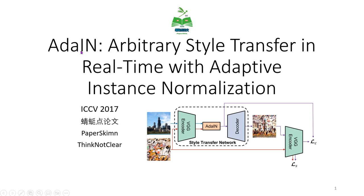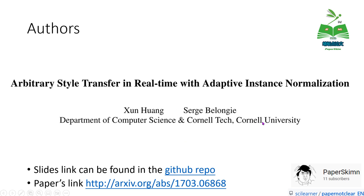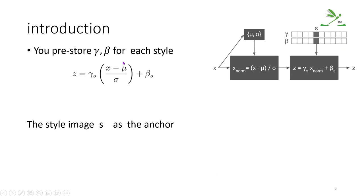This paper, 'Arbitrary Style Transfer in Real Time with Adaptive Instance Normalization,' is published at a conference and authored by researchers from Cornell University. The paper focuses on instance normalization and conditional instance normalization for style transfer. For normalization layers like batch norm or instance norm, given input x, they compute the mean mu and standard deviation of x, then apply two sets of learnable parameters: gamma for scaling and beta for bias.